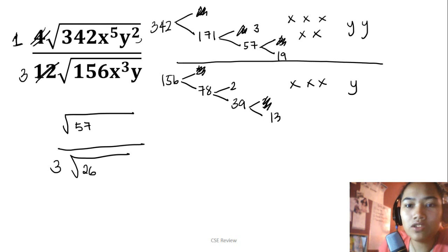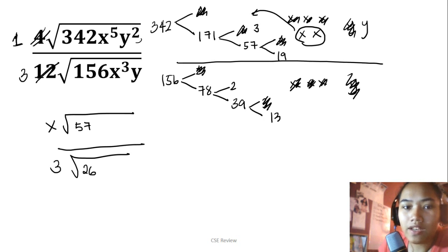Now for the x, we have 5 on top, 3 on the bottom. So we can cancel 3 from here and 3 from the top. Now we pair off what we can pair. In this case, since there are 2 x's, we can bring it out. The x will go here, outside the radical. For y, there's y on top and y on the bottom, so they cancel. One y remains. Since it's by itself with no pair, it will stay inside.